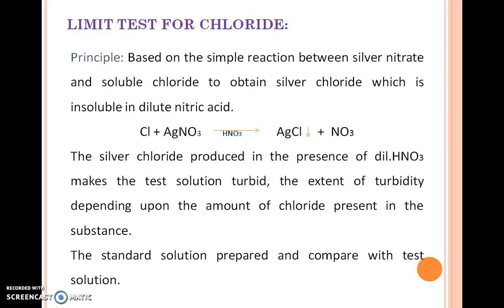So we begin limit test for Chloride. This term indicates you have to identify the chloride impurities in a substance, and for this identification we use a very simple test. The basic principle is based on the simple reaction between silver nitrate and soluble chloride to obtain silver chloride, which is insoluble in dilute nitric acid.